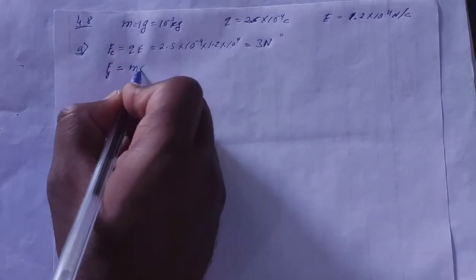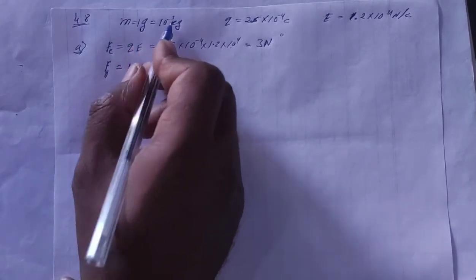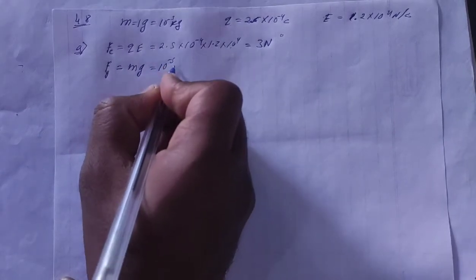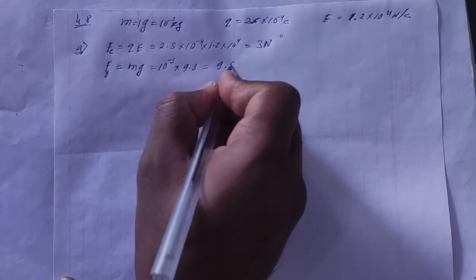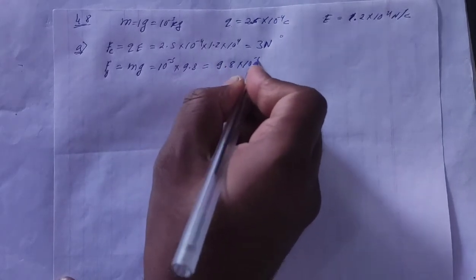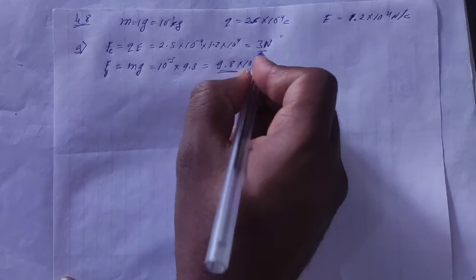Gravitational force will be Mg. M is 1 gram, that is 10 to the power minus 3 kg. G is 9.8. So gravitational force will be 9.8 into 10 to the power minus 3 newton. Now look, between these two forces...